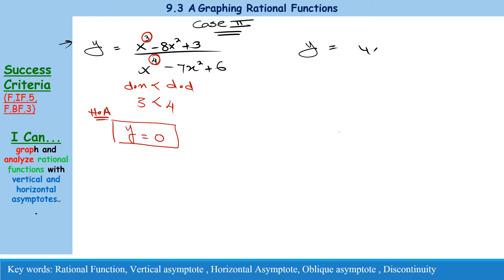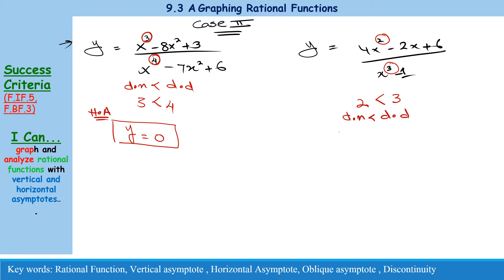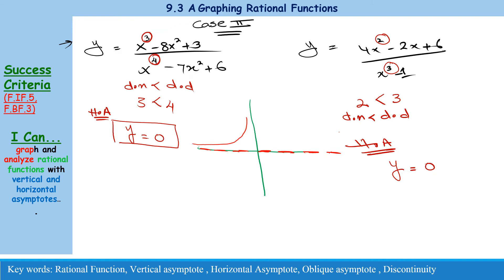Another Case 2 example: y equals 4x squared minus 2x plus 6 divided by x cubed minus 1. The degree of the numerator is 2 and the degree of the denominator is 3. Since the degree of the numerator is less than the degree of the denominator, the horizontal asymptote is at y equals 0. Just draw a dotted line at 0; the graph will come closer and closer but never touch that line.